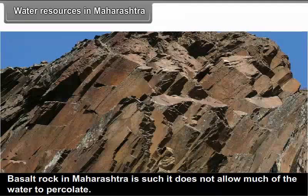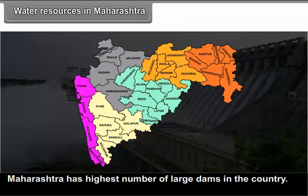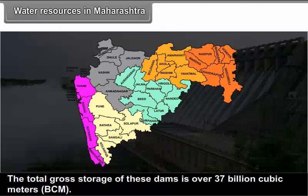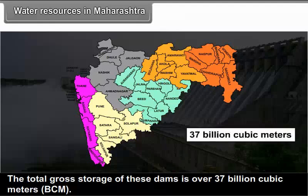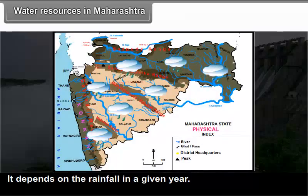The water which flows through river channels and gets collected in lakes or stored in reservoirs is termed surface water. Water that percolates into the ground and gets stored at deeper depths is termed ground water. Basalt rock in Maharashtra does not allow much water to percolate. Dams having height of 10 meters and above are called large dams. Maharashtra has the highest number of large dams in the country — there are more than 1800 major dams in Maharashtra, with a total gross storage of over 37 billion cubic meters.